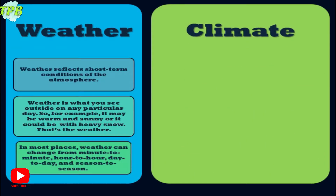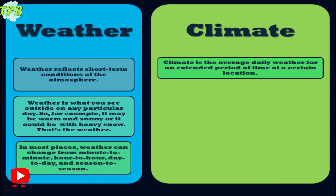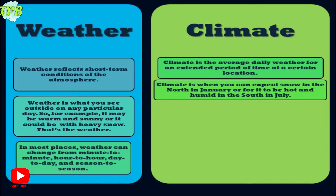Climate is the average daily weather for an extended period of time at a certain location. This extended period of time can be more than 10 to 13 years or even more. Climate is when you can expect snow in the north of Pakistan in January and for it to be hot and humid in the south in July.